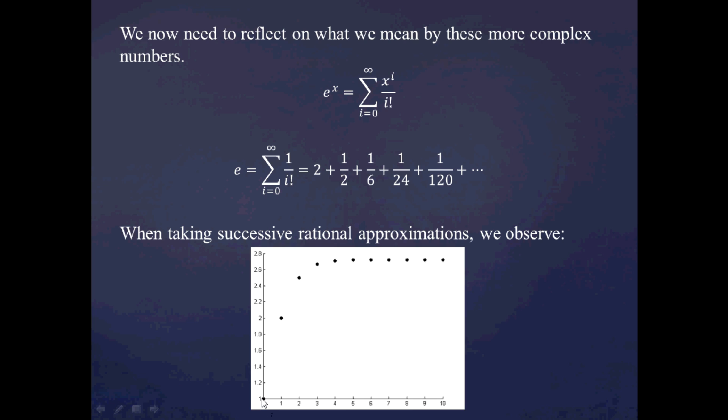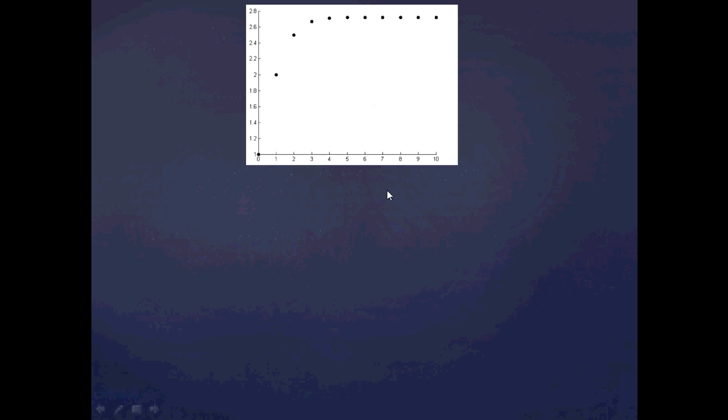then we build our way up to e. And, as you hopefully know, e is approximately 2.71828, so this looks pretty good here. Even after four iterations, it looks like it starts to level off here, and this series converges quite nicely to e. Furthermore, this is what we call a monotonically increasing series.